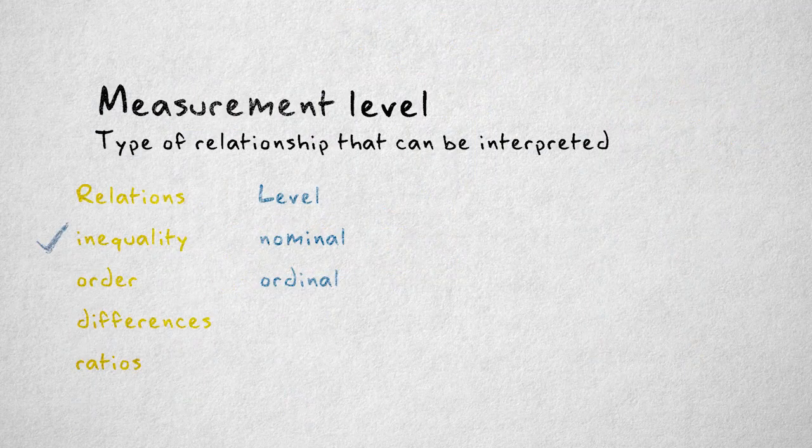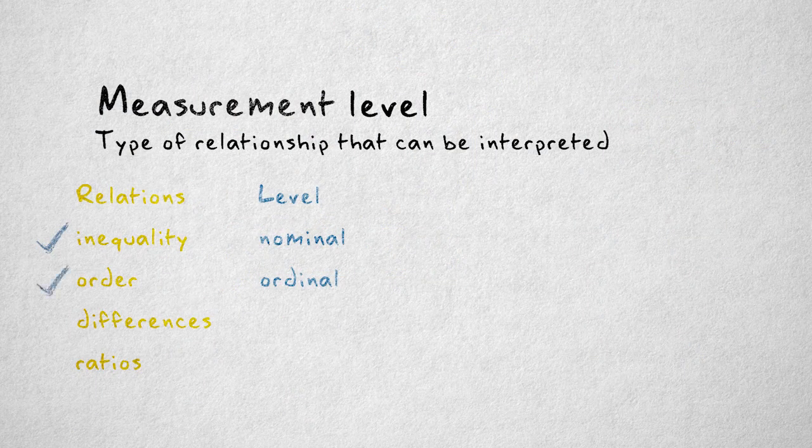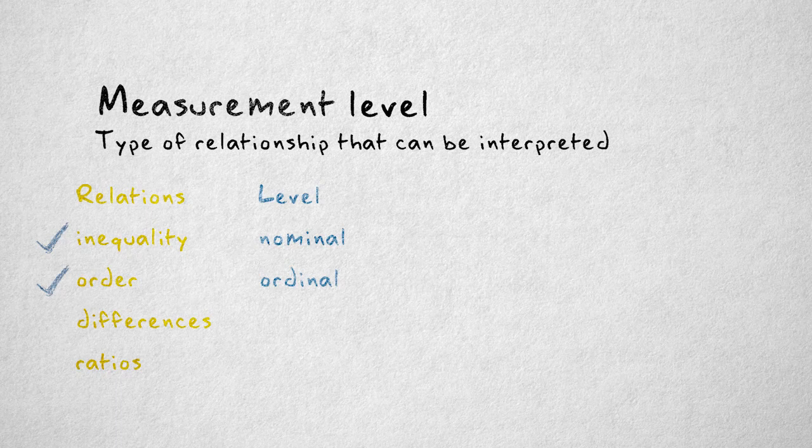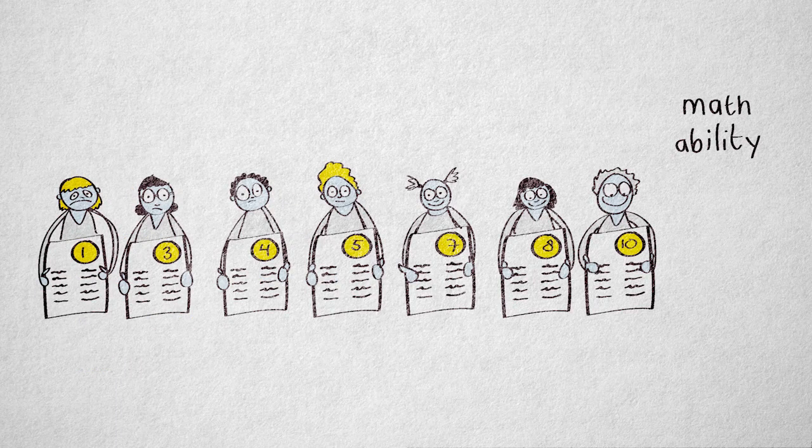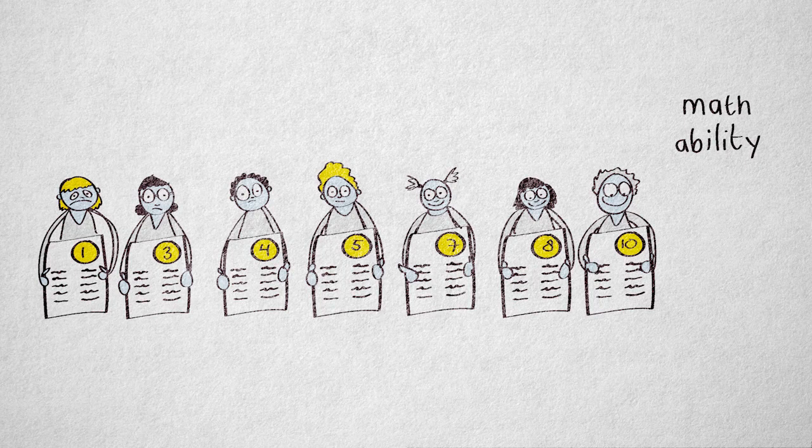Ordinal variables allow for differentiation and ordering of values. Suppose I want to measure math ability and use the number of correct answers on a math test with 10 questions. The more answers somebody gets right, the higher their math ability. We can order people's test scores to reflect their order in math ability.